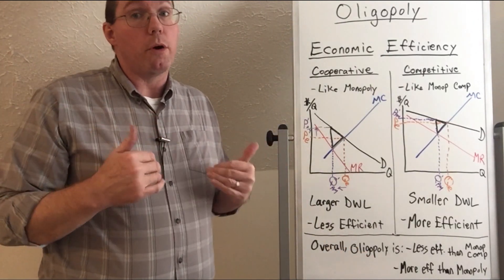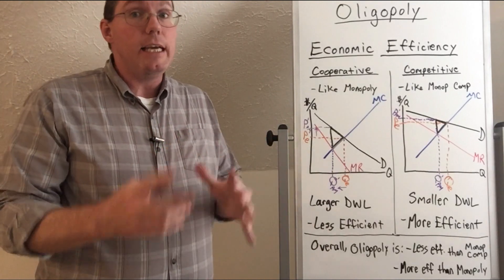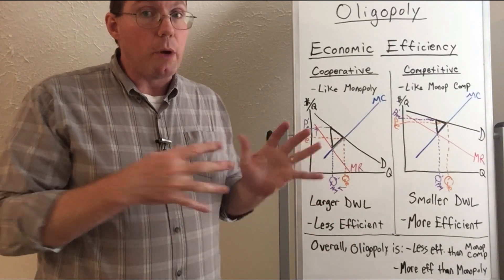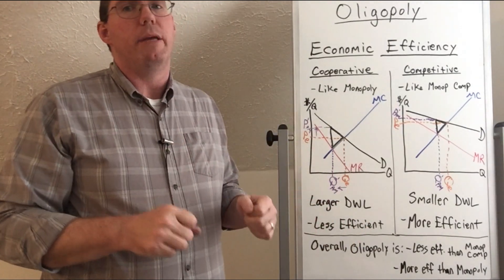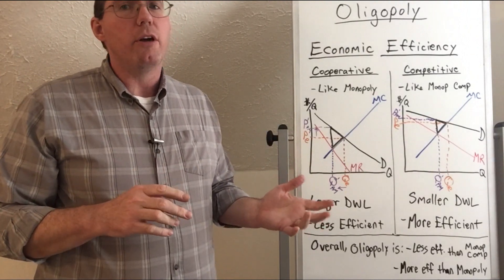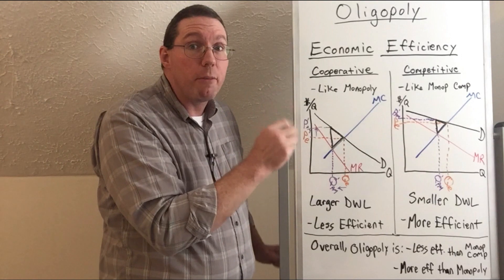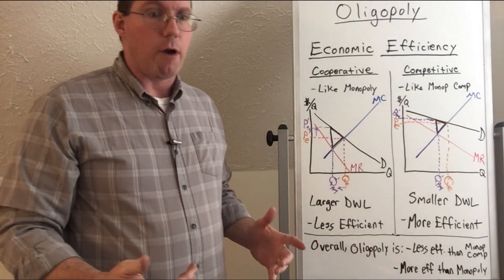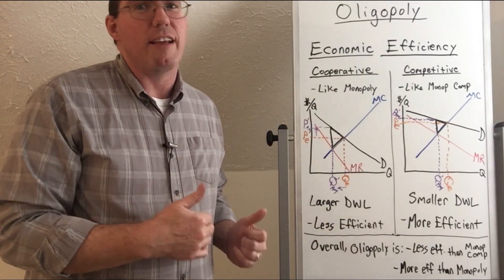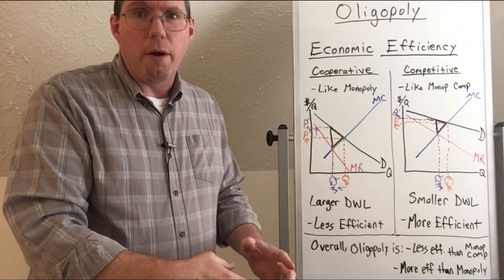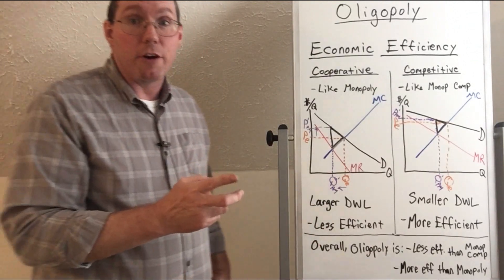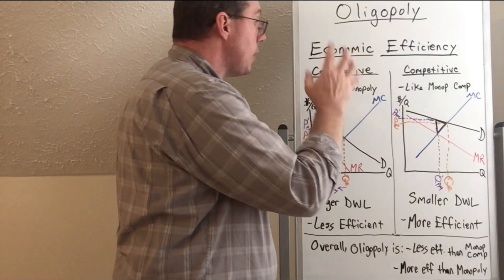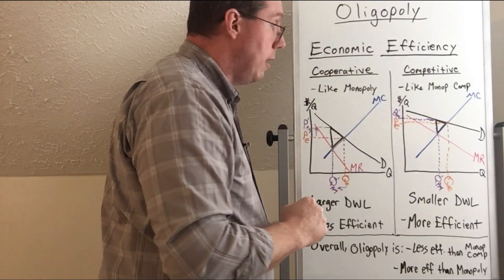This is an important principle: oligopoly firms can either cooperate or compete. To really understand why, you'd need to dig in much deeper — including looking at cheating behavior. For example, when they cooperate, what if one firm cheats on the agreement, like siblings who agree everyone gets five but one takes seven? That kind of cheating behavior is something you'd explore at the intermediate or advanced level.